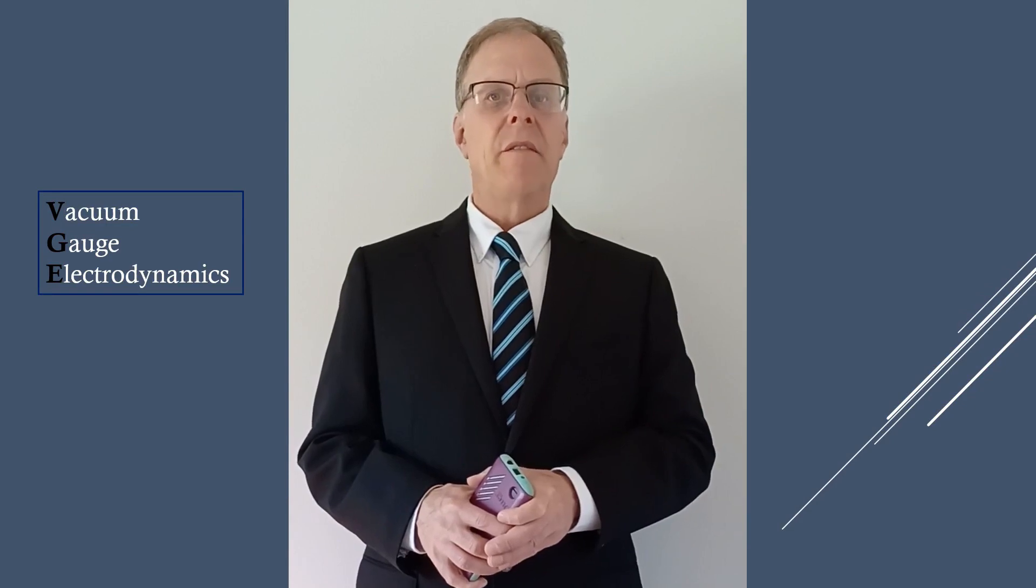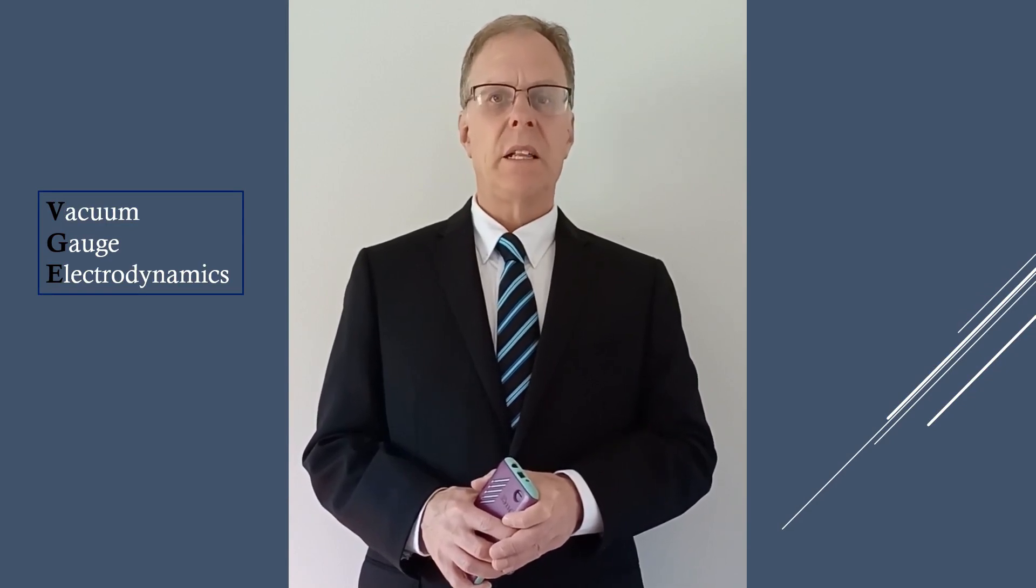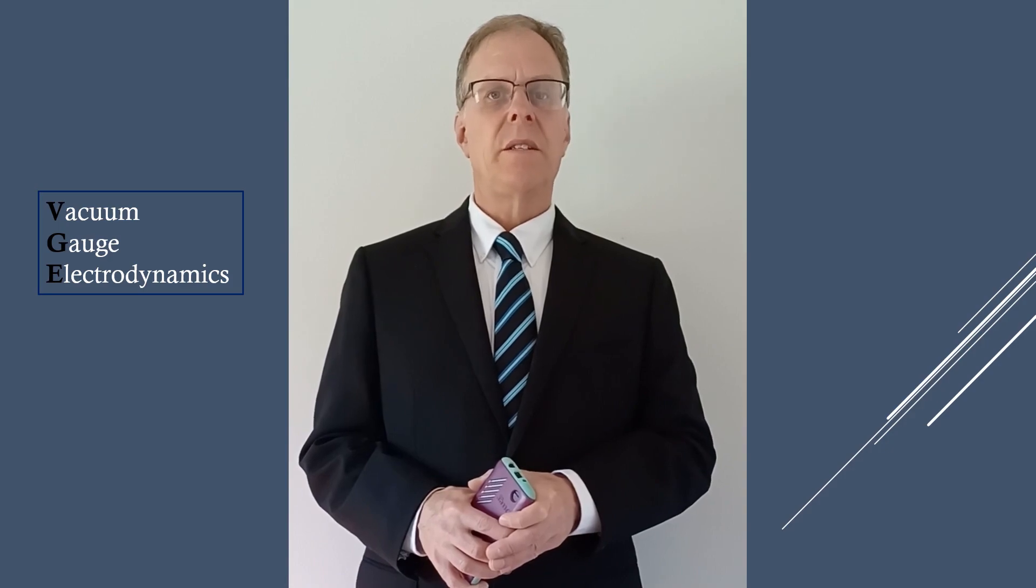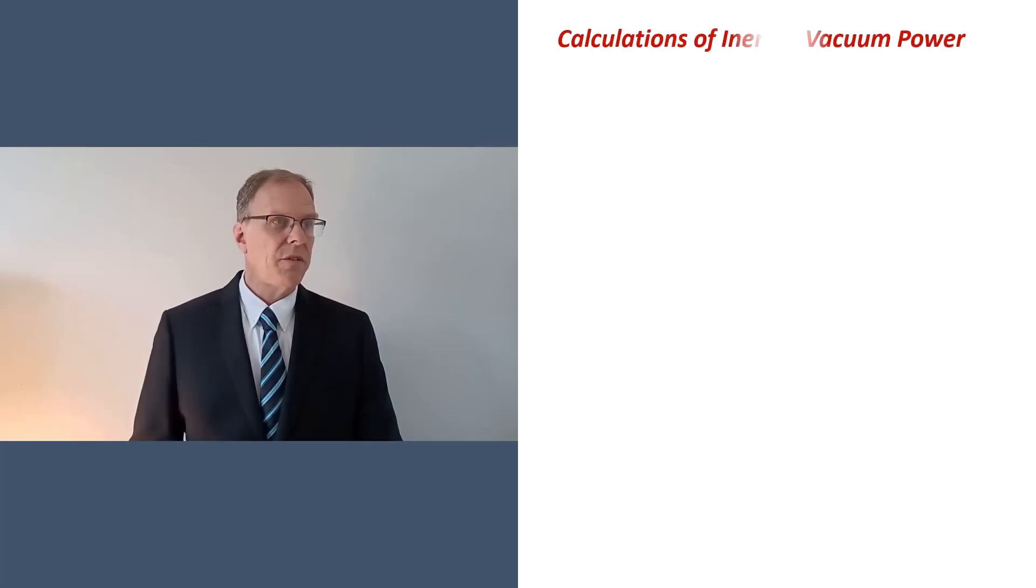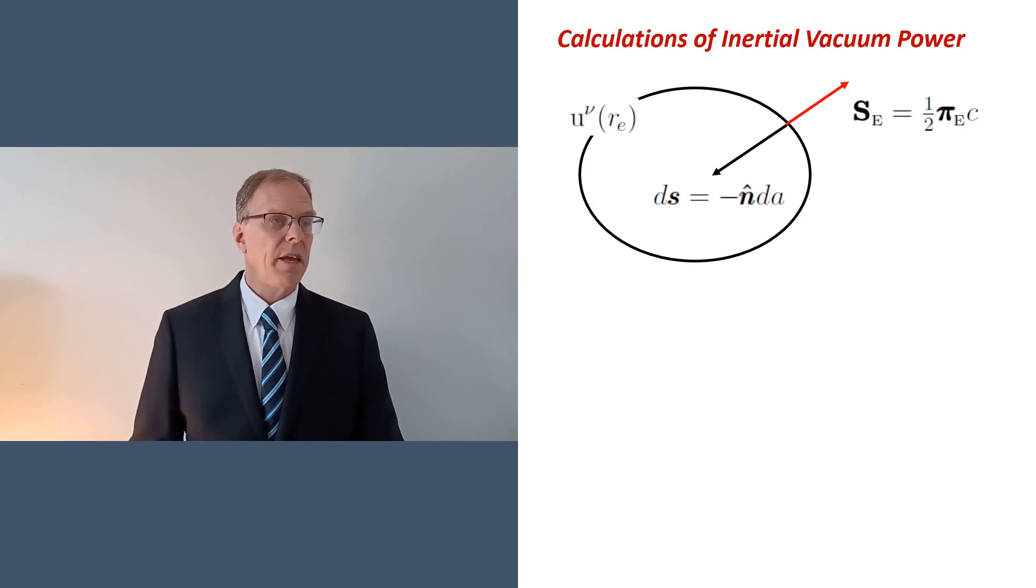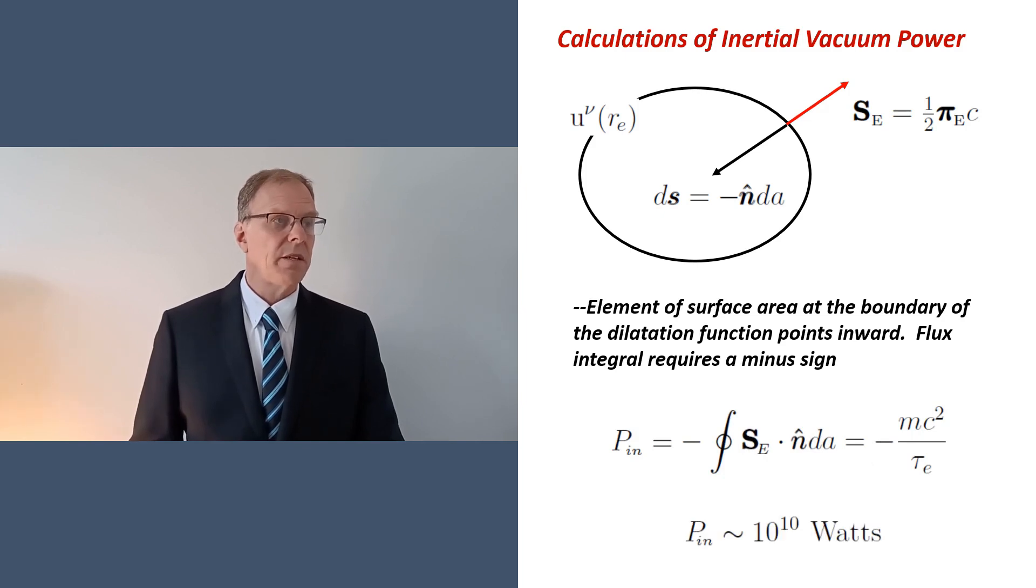Now let's calculate the invariant power emitted by a constant velocity electron. There are actually several ways to do this. In this first approach, we begin only with the electric flux vector. The boundary of the vacuum dilatation is illustrated by this diagram. A unit surface area on the boundary points inward, while the flux field points outward. This means that the electric flux integral around the boundary necessarily inherits a minus sign. The value of the power radiated is enormous on the order of 10 to the 10 watts, and the impact of this number and the significance of the minus sign is not well understood.